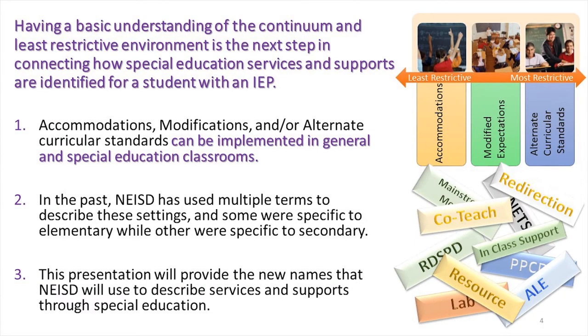Having a basic understanding of the continuum and least restrictive environment is the next step in connecting how special education services and supports are identified for a student with an IEP. Keep in mind that generally accommodations, modifications, and alternate curricular standards can be implemented in either general or special education settings based upon variables such as academic content, requirements of the course, and levels of support needed for instruction in order for the student to meaningfully participate and make progress in the curriculum and the IEP. Historically, Northeast Independent School District has used multiple terms to describe these settings. Secondary campuses use different terms than elementary campuses.